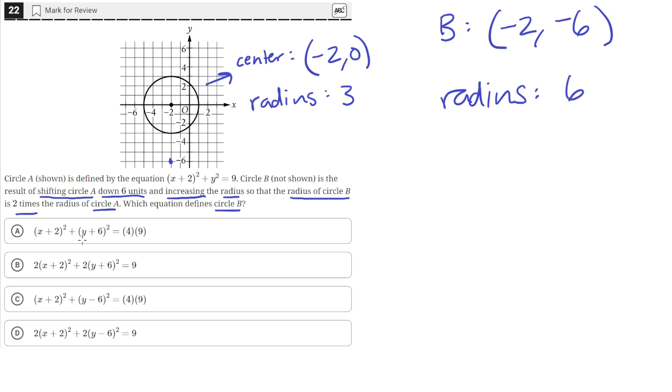So we can write an equation for that using these two pieces of information. The equation of a circle looks like this: x minus h squared plus y minus k squared equals r squared, where h, k are the coordinates of the center and r equals the radius.